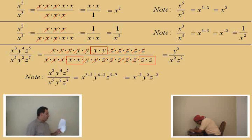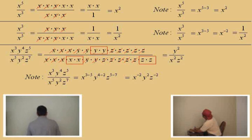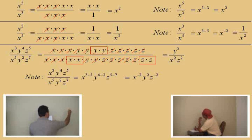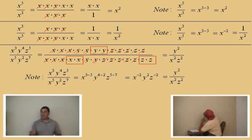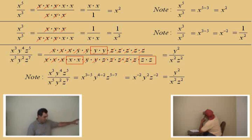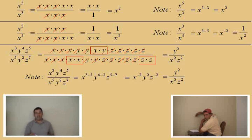If we look at our result, we see that x to the negative 2 times y squared times z to the minus 2 must be the same as our answer before: y squared over x squared times z squared. So with those negative exponents, what actually happens when you take them to the denominator is the exponent becomes positive. We'll talk a little bit more about that in a few minutes.